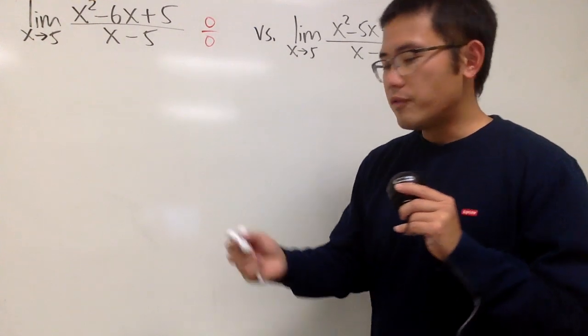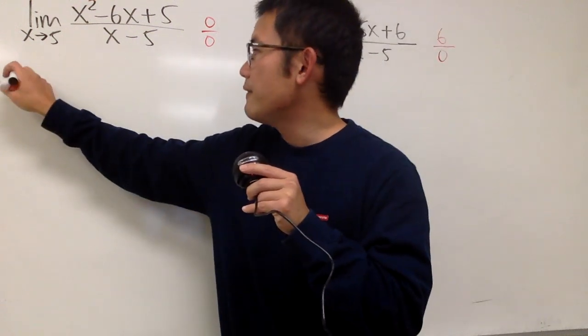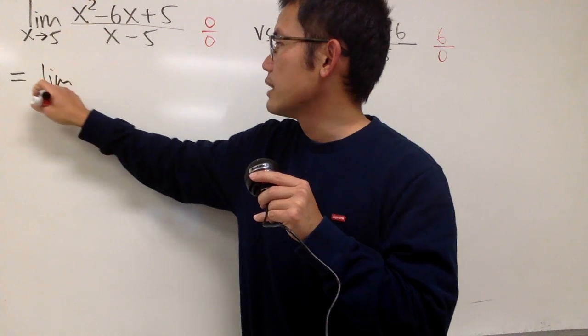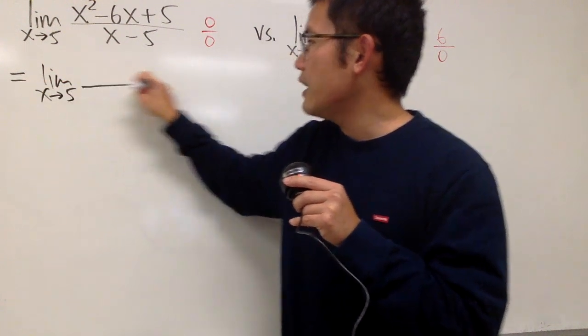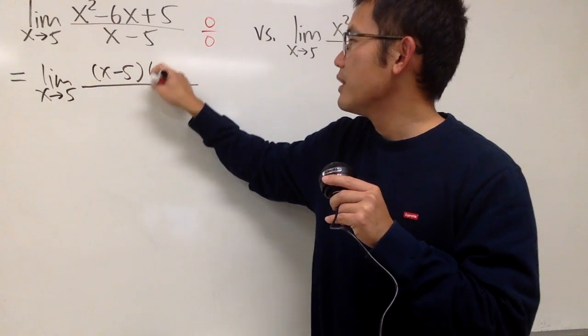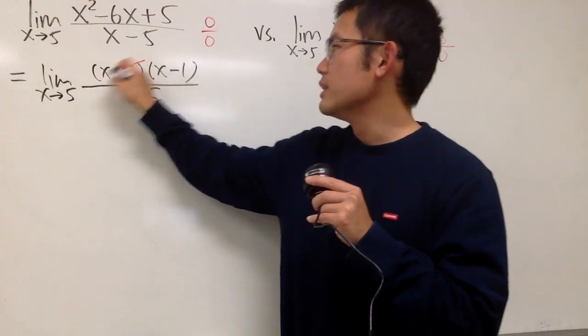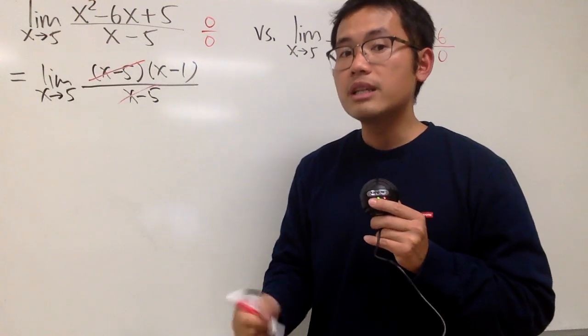So let's do this one first. It's slightly more natural for us to do because we can actually just do some nice factoring. So let's see the limit as x approaching 5. On the top, we get (x-5)(x-1). On the bottom, we have x-5. And then of course, the x-5 can be canceled.